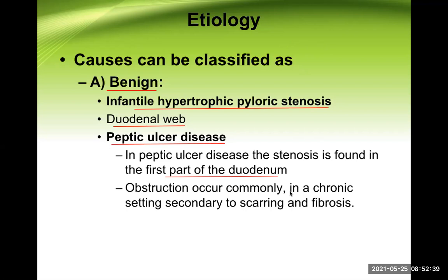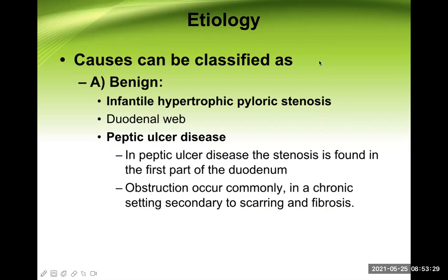Obstruction from peptic ulcer disease can occur in two different situations: in the acute situation, there is edema formation and that edematous area leads to obstruction; whereas in a chronic setting, it occurs because of scarring and fibrosis, which makes the lumen narrow and leads to obstruction. Both settings can cause gastric obstruction, but the chronic setting is much more common.